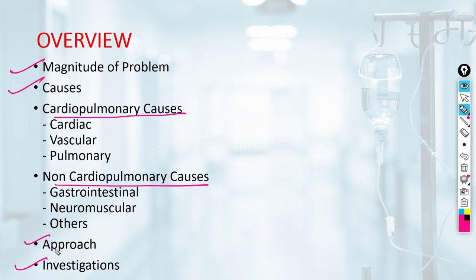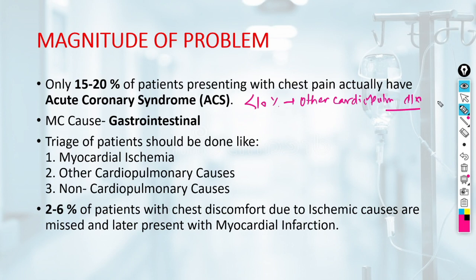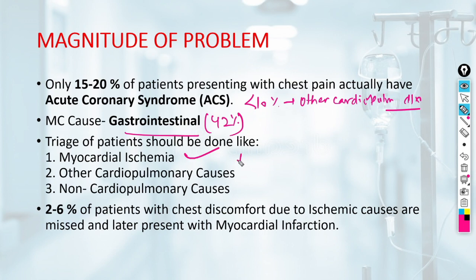Talking about the magnitude, only 15 to 20 percent of patients presenting with chest pain to the emergency department actually have acute coronary syndrome. Another less than 10 percent have other life-threatening cardiopulmonary disorders. The most common cause of chest pain is gastrointestinal, which accounts for 42 percent of cases. The triage should first rule out myocardial ischemia as soon as possible, then other cardiopulmonary causes, and finally non-cardiopulmonary causes.